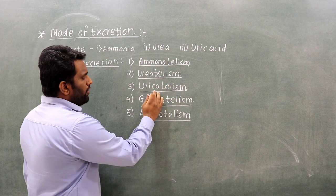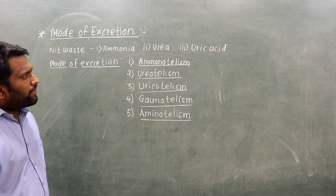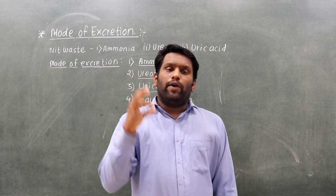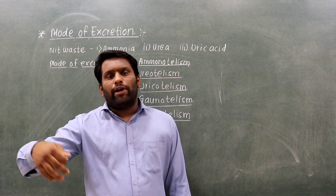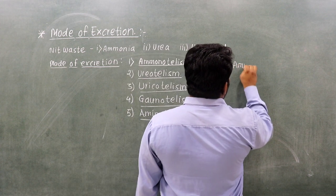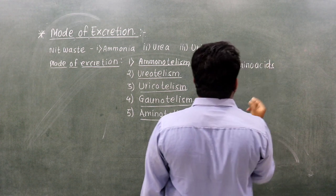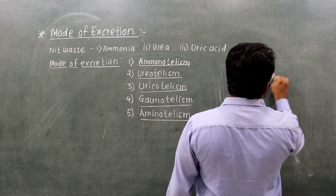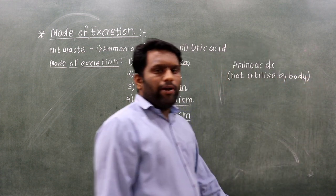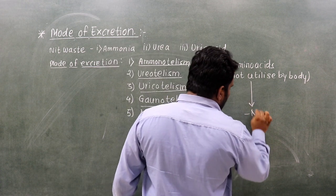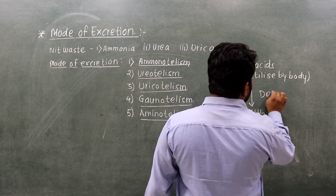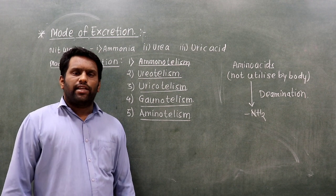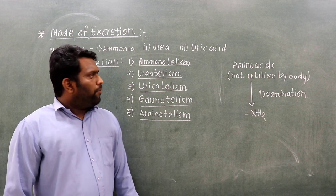The five modes of excretion are: ammonotelism, ureotelism, uricotelism, and aminotelism. When amino acids are utilized in the body, this process is called deamination. Through deamination, nitrogenous waste products such as ammonia, urea, and uric acid are produced. Once this waste material is ready, it is eliminated through excretion.